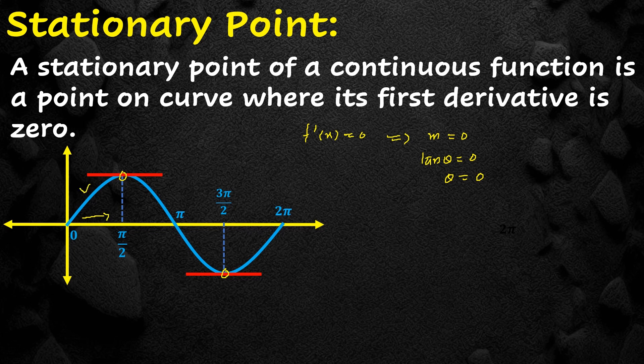Moving from the left of π/2 the function is increasing, and moving to the right of π/2 the function is decreasing. At 3π/2, on the left the function is decreasing and on the right it is increasing. So at a stationary point, if the function is increasing on the left it is decreasing on the right, or vice versa.